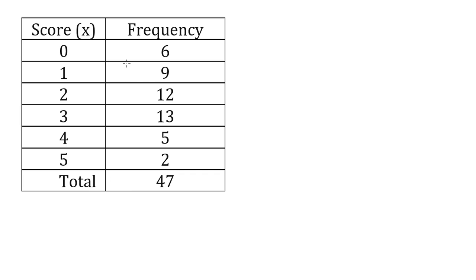Now a frequency table tells us how many times each score turned up in our data. So in our data for this example we have six zeros, nine ones, twelve twos, thirteen threes, five fours and two fives. So all of our data is between zero and five, and we want to find what was the median score.